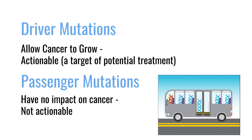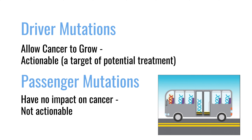There are other mutations that probably have no impact, and we often refer to those as passenger mutations. They're along for the ride. They have no particular effect on the cell. We know they're there. We know we all have mutations, but compared to the drivers that are actionable, they're just passengers along for the ride.